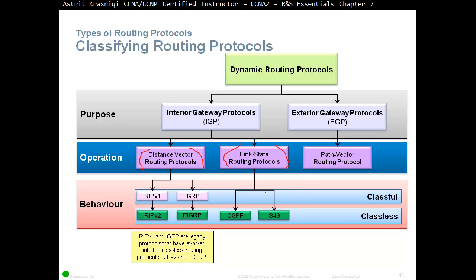For link state routing protocols, there is no classful — we go straight to classless — and we have only two: OSPF and ISIS. Link state routing protocols are classless by nature. For exterior gateway protocols, there is only one, which is BGP — Border Gateway Protocol — and you will be learning much more about this protocol on CCNP.